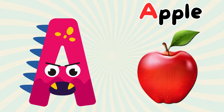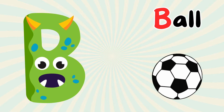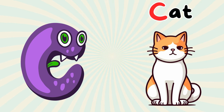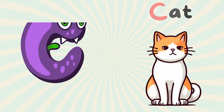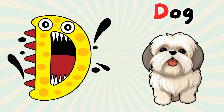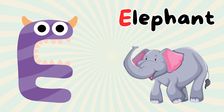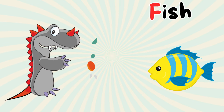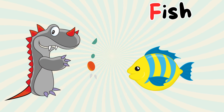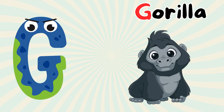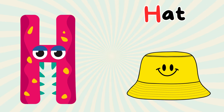A for apple. B for ball. C for cat. D for dog. E for elephant. F for fish. G for gorilla. H for hat.